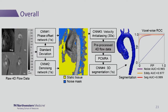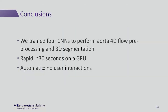Overall, we take our unprocessed 4D flow data and send it to four separate convolutional neural networks, as shown in this diagram, to obtain fully processed 4D flow data as well as a three-dimensional segmentation. The voxel-wise receiver operator curve shows an extraordinarily high area under the curve for each one of these steps.